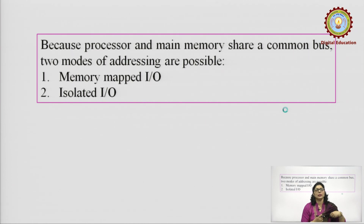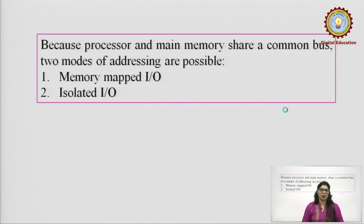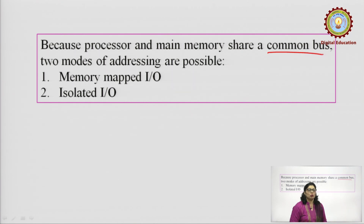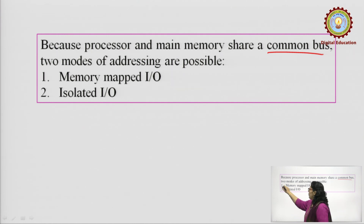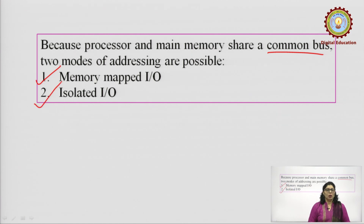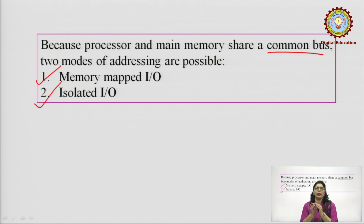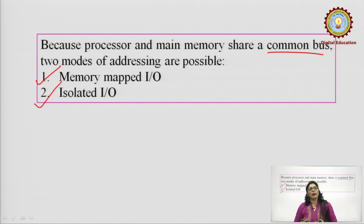This is an important part: the processor and the main memory both share the common bus — the system bus. Because they share a common bus, we have two modes of addressing: memory mapped I/O and isolated I/O. These are the two classifications of programmed I/O.